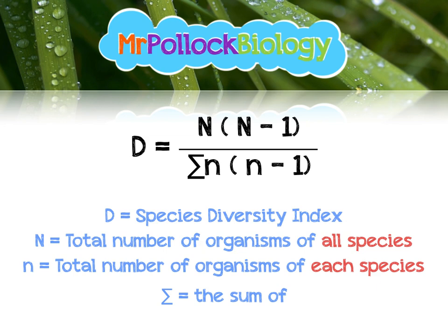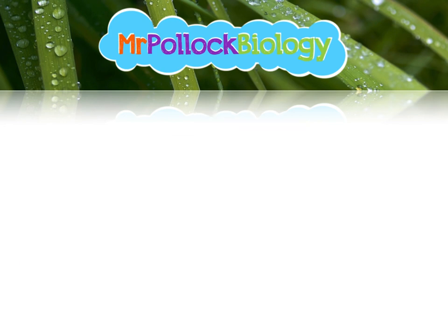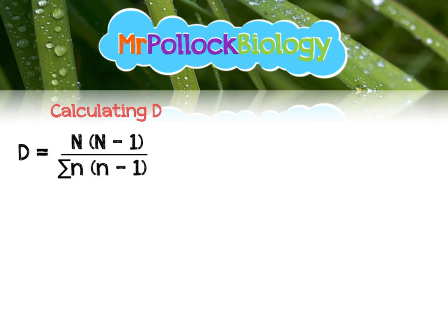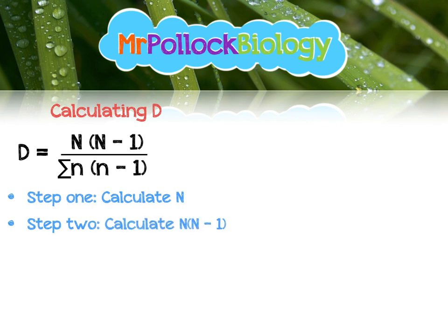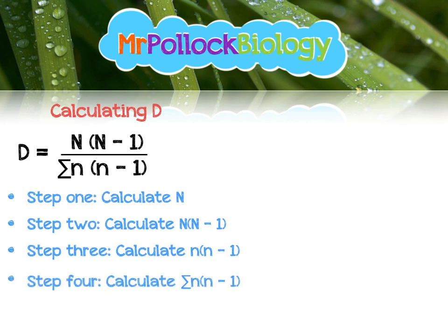Let's get some practice applying this equation and calculate D. Remember, you get given the equation in an exam. I like to break this down into simple steps. Step one: calculate capital N. Step two: calculate capital N multiplied by capital N minus one. Step three: calculate lowercase n multiplied by lowercase n minus one — you'll have to do this for each species. Step four: sum the lot, sigma it all up. And step five: divide through.